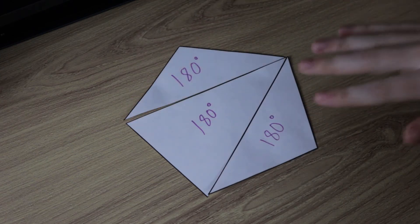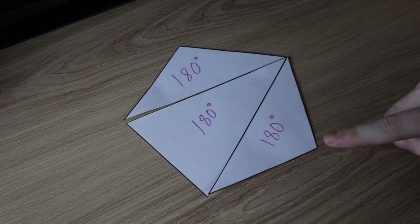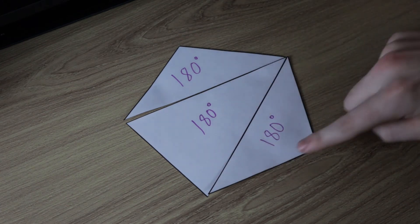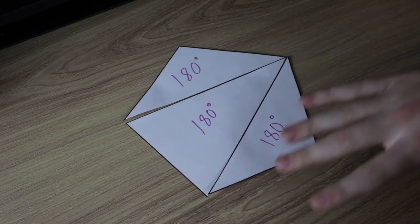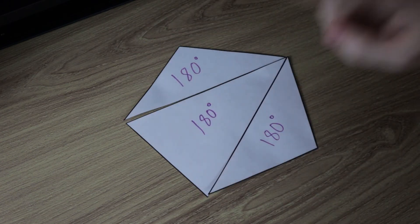Now looking at the sheets here we can see that we have one, two, three triangles. Each triangle has interior angles that add up to 180 degrees. So we can figure out that the interior angles of a pentagon, of a five sided shape, must be 540 degrees.